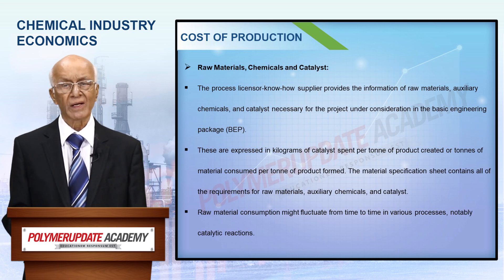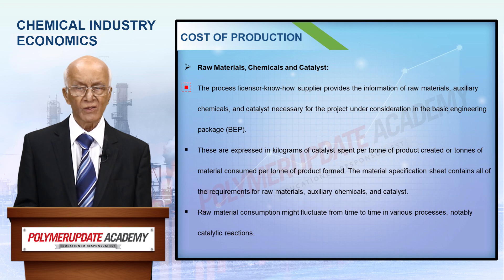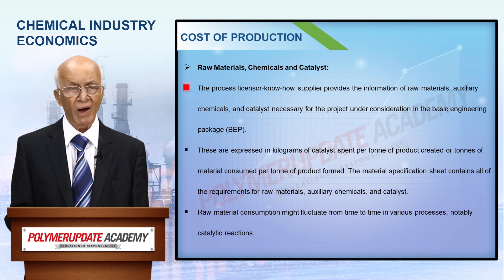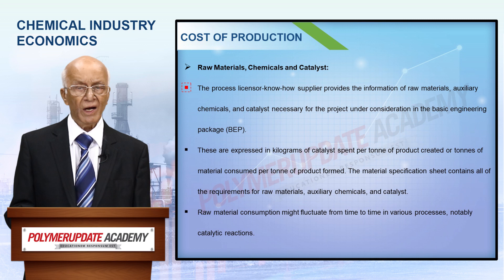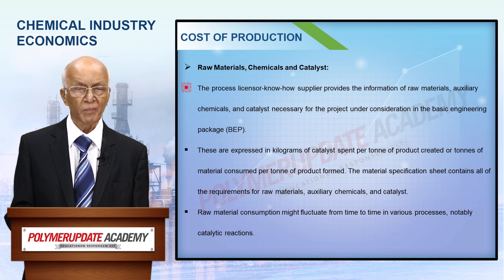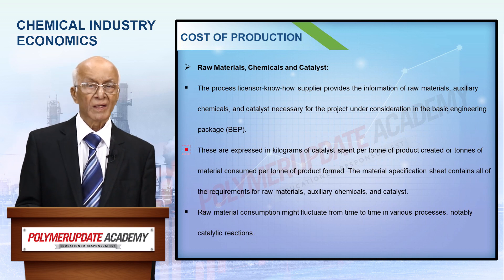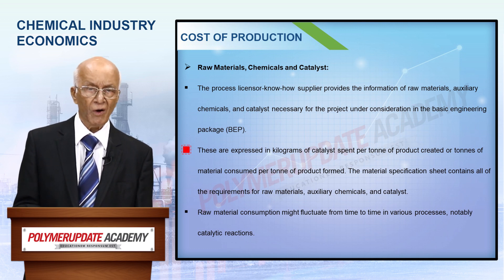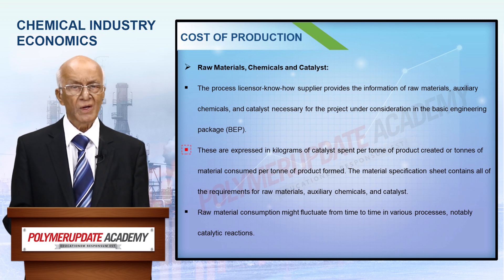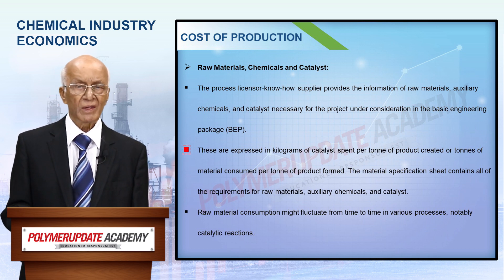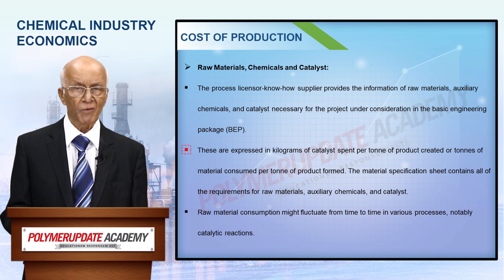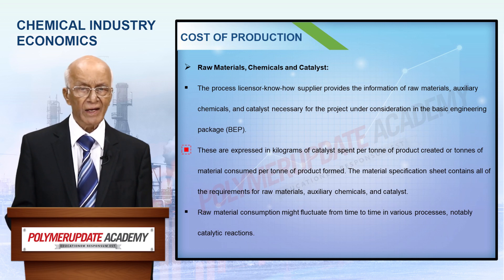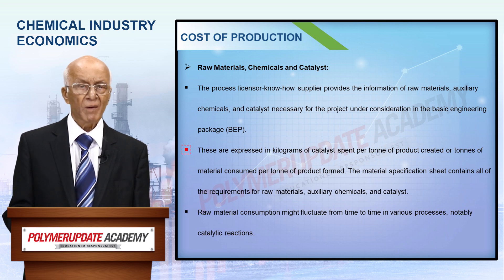Now let us look at raw materials, chemicals, and catalysts. The details of raw materials, auxiliary chemicals, and catalysts required for the project are given by the process licensor — that is the know-how supplier — in the basic engineering package. These are presented in terms of tons of materials consumed per ton of product, or kilograms of catalyst consumed per ton of product formed. The entire specification of raw materials, auxiliary chemicals, and catalysts are given in terms of a material specification sheet.